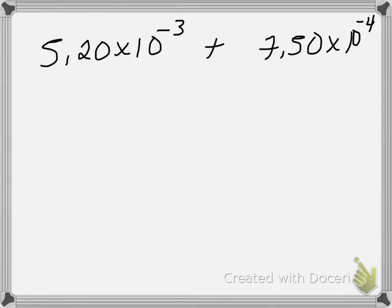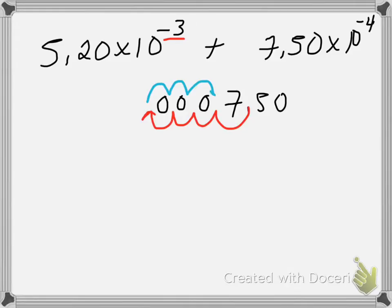So I've got 5.20 times 10 to the negative third, 7.50 times 10 to the negative fourth. Probably easiest if we get everything into negative third. So I'm going to set that one aside. 7, 5, 0. I'm going to put some imaginary 0's out in front. And I know this is to the negative fourth, 1, 2, 3, 4. 1, 2, 3. So I have 0.750 times 10 to the negative third. Now it's a pretty easy addition. Okay.